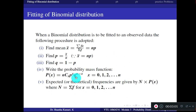The expected frequencies after fitting the binomial distribution are given by capital N into P(x), where P(x) is the binomial PDF formula applied for each value of x, and capital N is the summation of all frequencies.